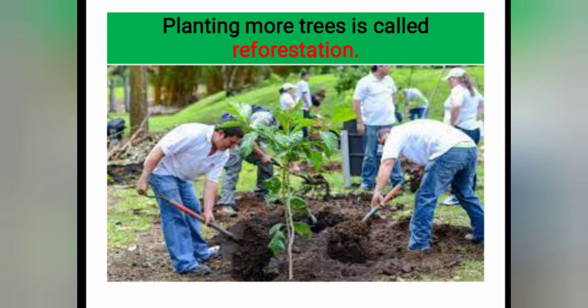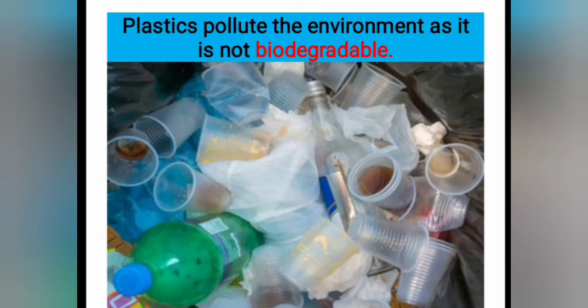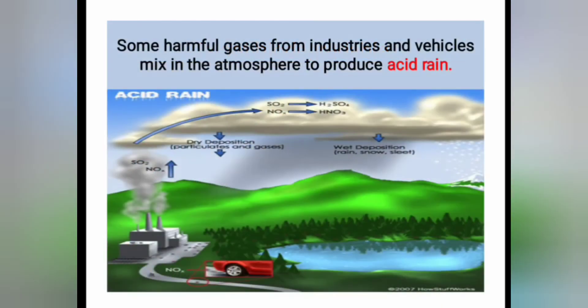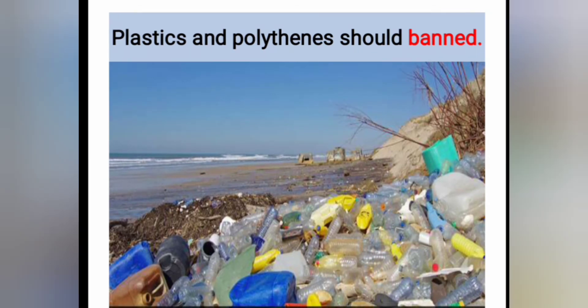Planting more trees is called deforestation. Then next, cutting down of trees is called deforestation. Plastics pollute the environment as it is not biodegradable. Some harmful gases from industries and vehicles mix in the atmosphere to produce acid rain. Plastics and polythene should be banned. These are the different ways by which our planet is getting polluted.